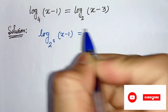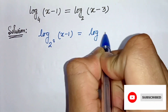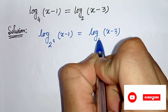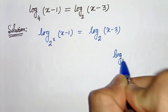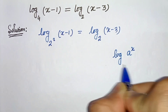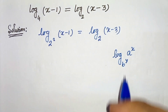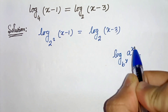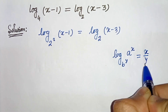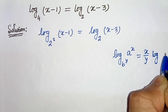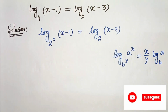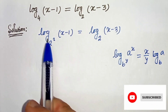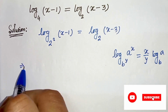So we have log of (x minus 1) base 2 squared equals log of (x minus 3) base 2. Now we will use a logarithmic formula: log of a to the power x, base b to the power y, can be written as x divided by y times log of a base b.